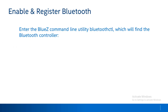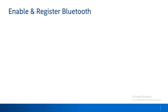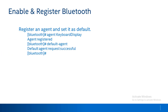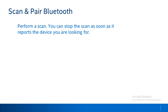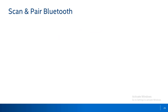After enabling built-in Bluetooth on Intel Edition board, use the BlueZ command line utility Bluetooth CTL to identify the Bluetooth controller as shown. The next step is to register an agent and set it to default. Then perform a scan to identify any nearby Bluetooth device. Once the intended device is identified, close the scan. The next step is to pair the built-in Bluetooth module with the target device using its MAC address.